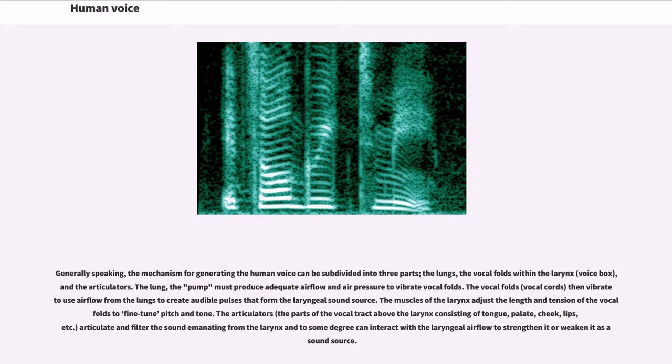The lungs must produce adequate airflow and air pressure to vibrate vocal folds. The vocal folds then vibrate using airflow from the lungs to create audible pulses that form the laryngeal sound source. The muscles of the larynx adjust the length and tension of the vocal folds to fine-tune pitch and tone. The articulators articulate and filter the sound emanating from the larynx and can interact with the laryngeal airflow to strengthen or weaken it as a sound source.